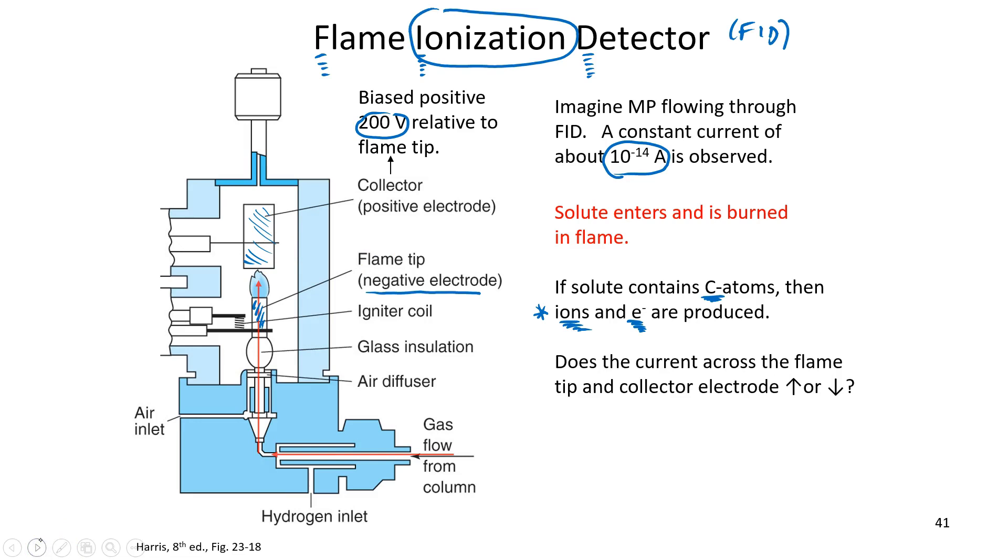Well, I bet you're thinking what I'm thinking. I bet you're thinking that the presence of these ions and electrons are going to increase that current. And that's right. So that's the response that we measure in the FID. Again, the solute comes in, it's burned, ions are produced, and there's an increased current across the flame tip and that collector electrode.